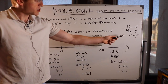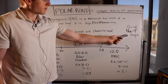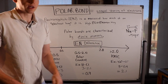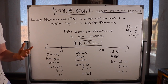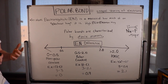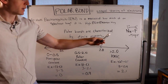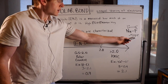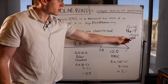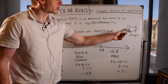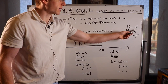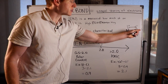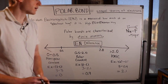The equation for dipole moment is represented as mu (μ), the Greek letter used to describe dipole moment, which equals Q, the charge, times R, the distance that is displaced. So the charge is being displaced in the direction of the more electronegative atom.